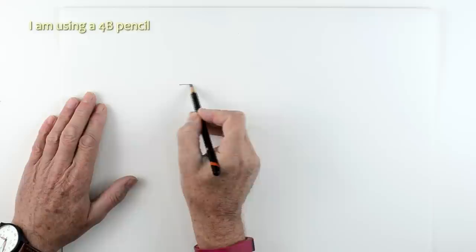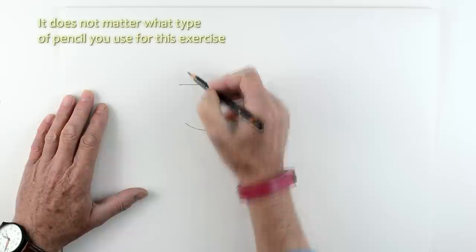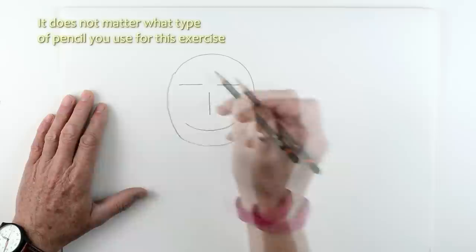Now I'm going to draw a single line here with a 4B pencil. It means nothing, it just looks like a line. But if I put two or three lines next to it, you can see it looks like eyes and a nose and a mouth. It isn't, it's just line. If I draw a circle around it, it becomes a face and we read it as a face.